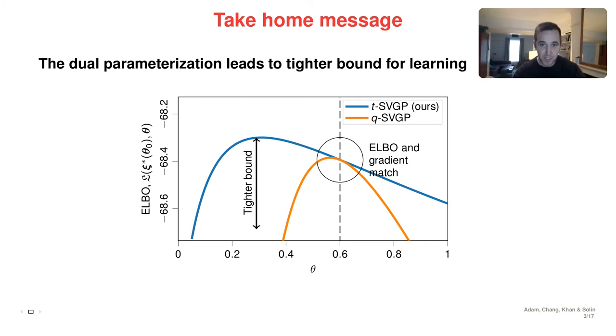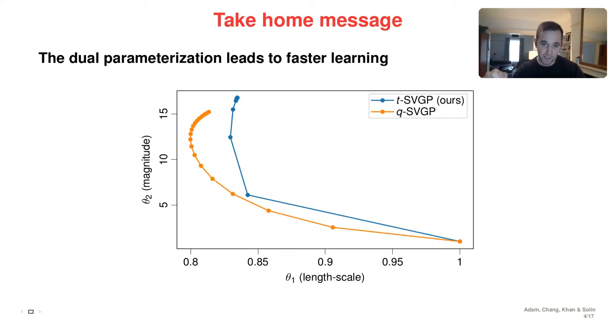Here, our algorithm that we're going to refer to as TSVGP has a tighter lower bound than alternatives called QSVGP. So this tighter lower bound leads to a better learning algorithm. Better in terms of the steps you make in your learning, you make bigger steps, and so you reach your optimum faster. And also in terms of speed, each of the steps depicted here are faster in our case.